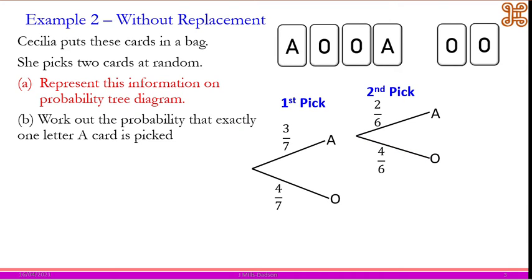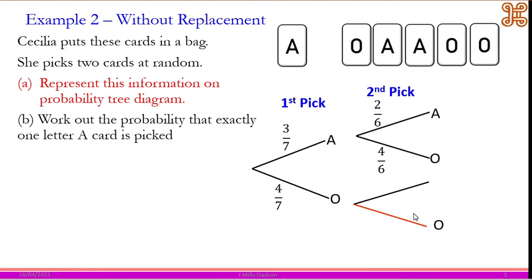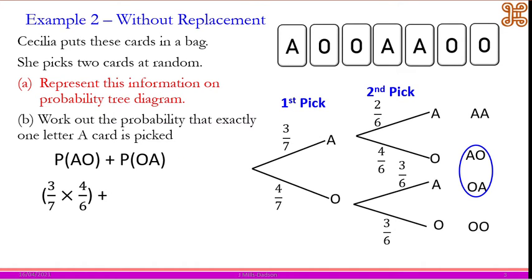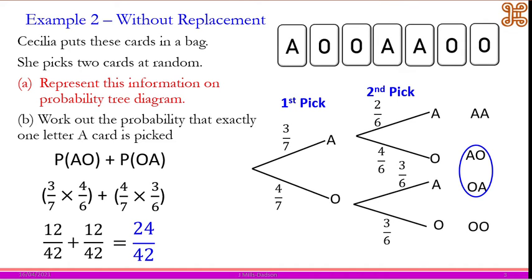Reverting to the original position — on the letter O branch, if we pick O then one of the O's must be taken away, so we now have 3 over 6 for the O's and the A's will be 3 over 6. To work out the probability that exactly one letter A card is picked — that is A-O and O-A — so: 3/7 times 4/6 plus 4/7 times 3/6, and that gives you 24 over 42.